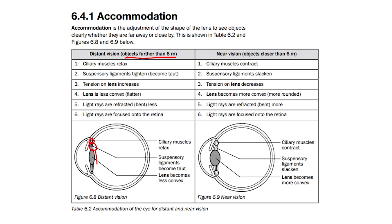This increases the tension on the lens, causing the lens to become less convex and flatter, instead of more round. As the lens is less convex, light rays are refracted less, causing the light rays to focus on the retina — this being the retina — so light is able to reach the retina as they are not bent as much. This allows for a clear image to be produced when looking at objects that are far away.